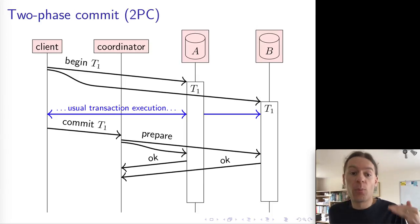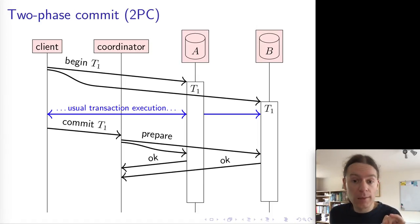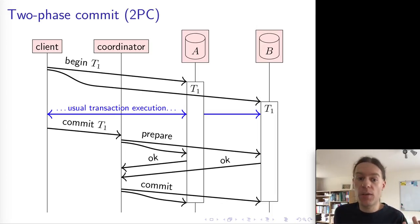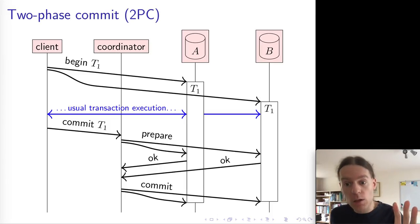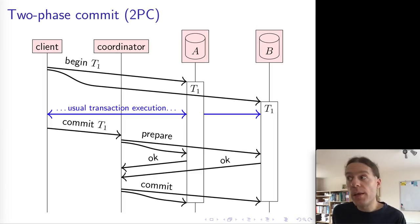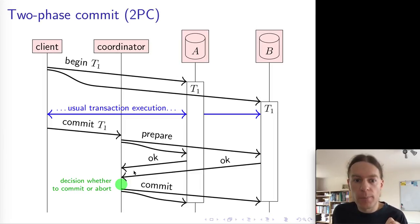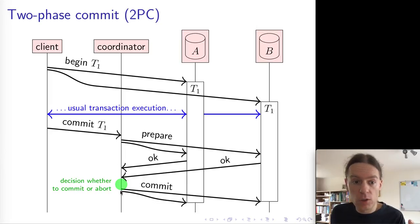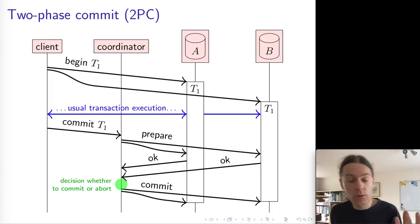The prepare message gets everything ready to be able to commit without actually ending the transaction yet. Then in phase two, if the coordinator says commit, the individual database nodes do the actual commit — they end the transaction, release all the locks, and everything is done. The key moment in this protocol is after the participating nodes have replied to the coordinator saying whether or not they're willing to commit; at that point the coordinator makes the decision whether to commit or abort.